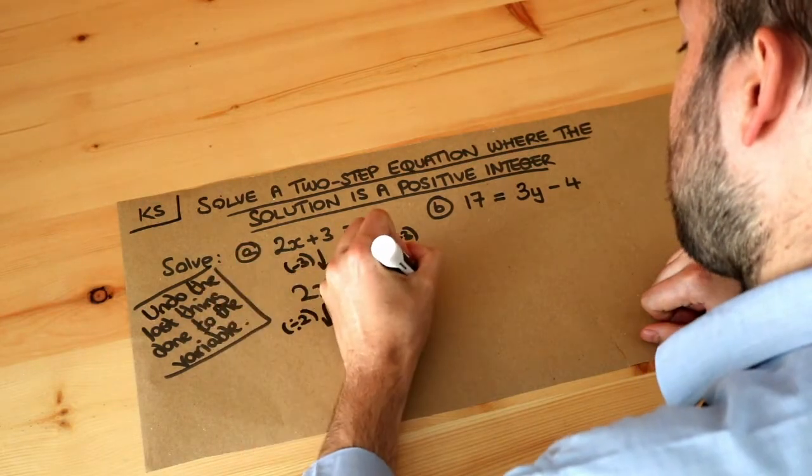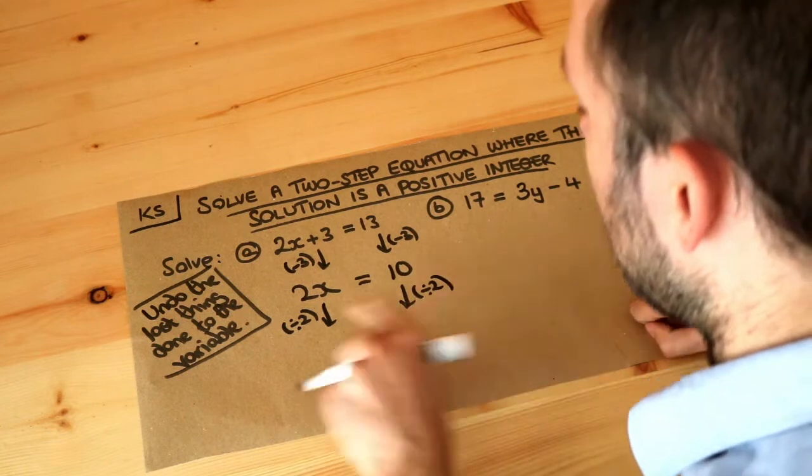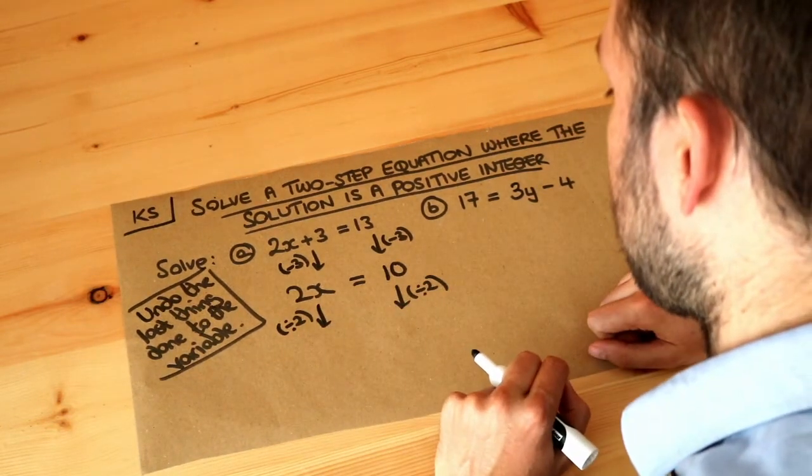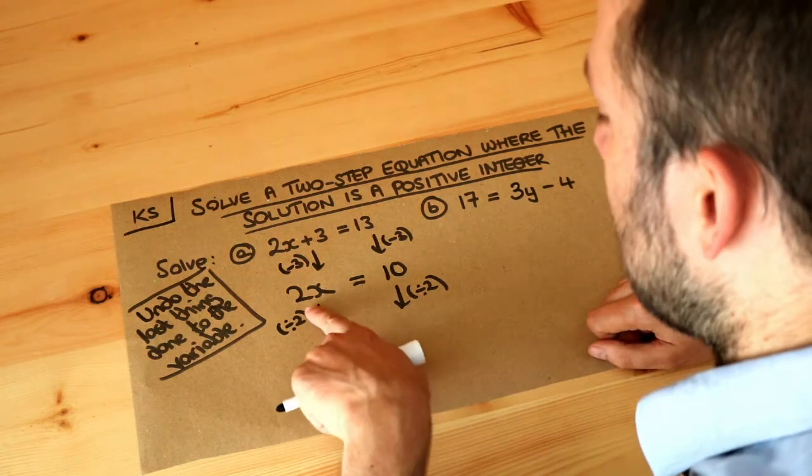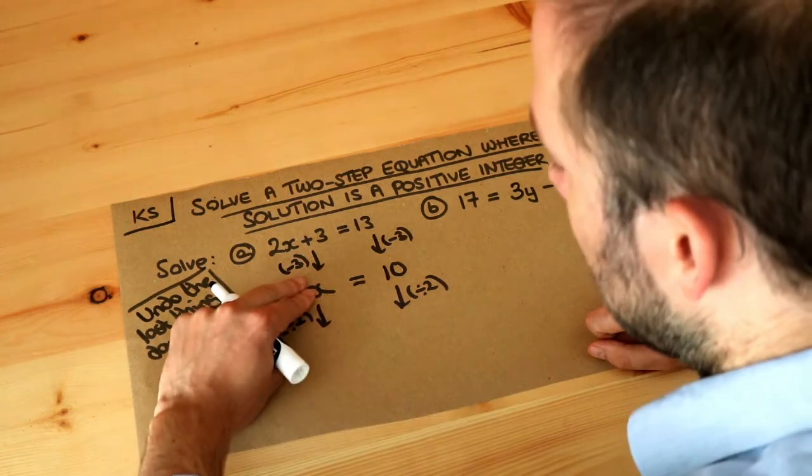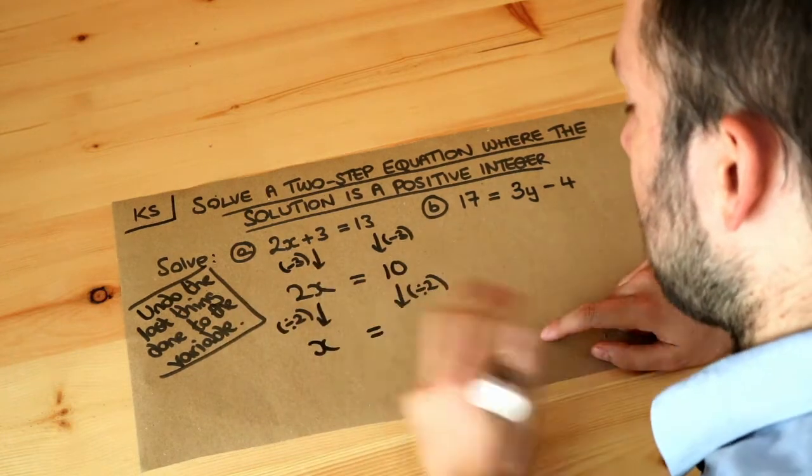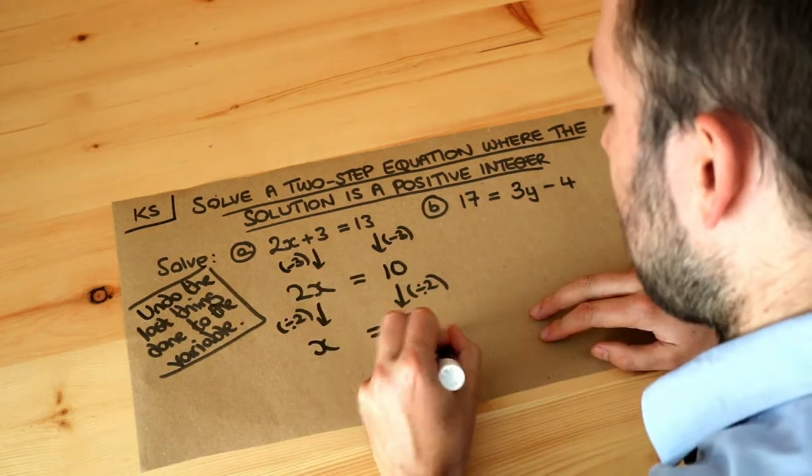So we're going to divide each side of the equation by 2. I like to put what I'm doing just on the side of these arrows here. So dividing this by 2 gets rid of the times by 2, and we're just left with x. And 10 divided by 2 is just 5. And that's the final solution.